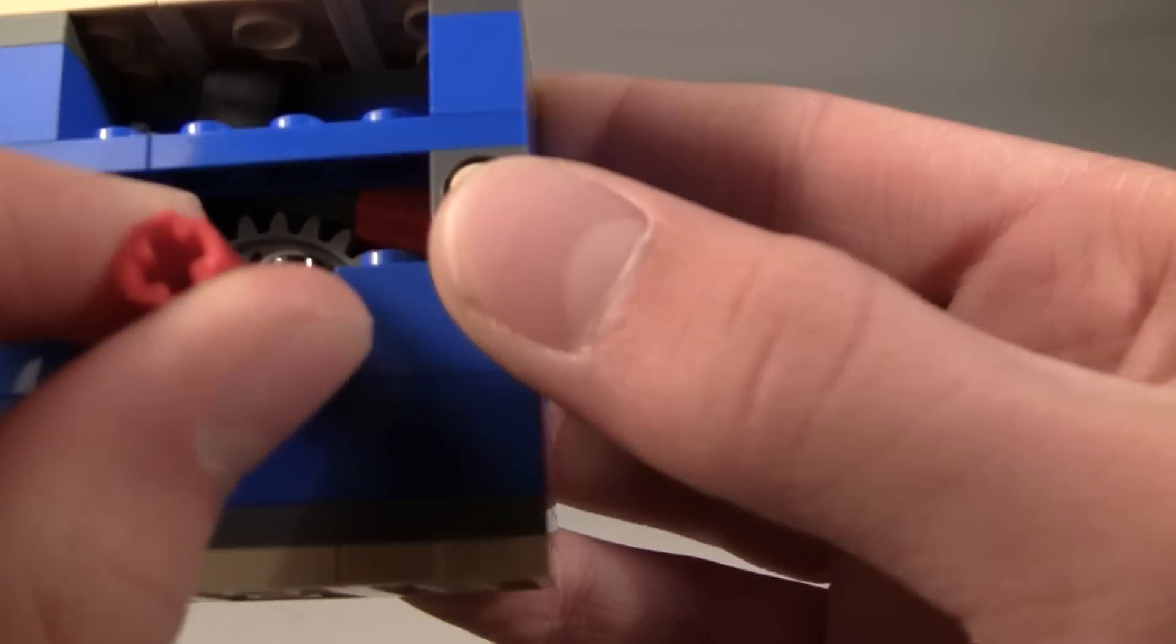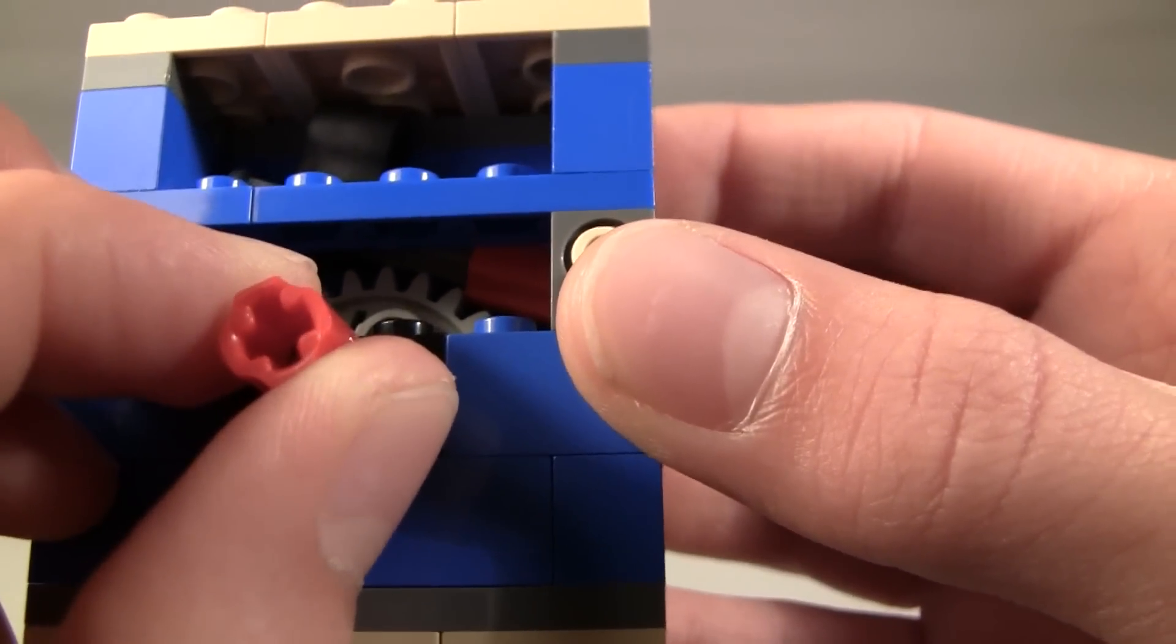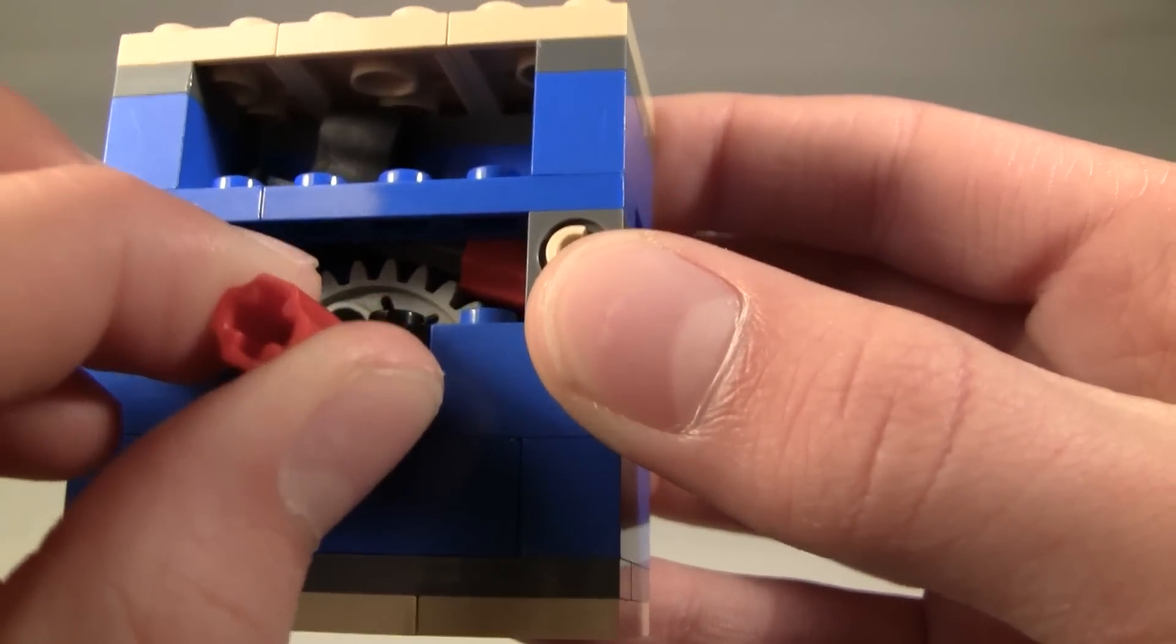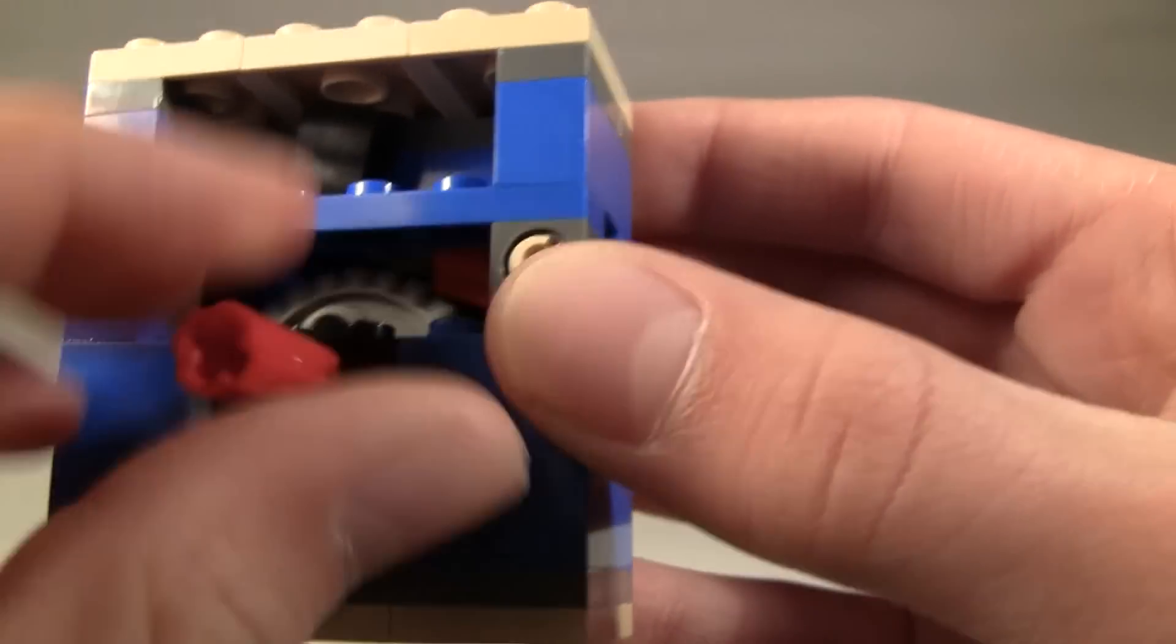When you twist it the other way, it gets caught on the little red ridge of the red piece. Stuck on the ridge, but the other way it doesn't get caught.